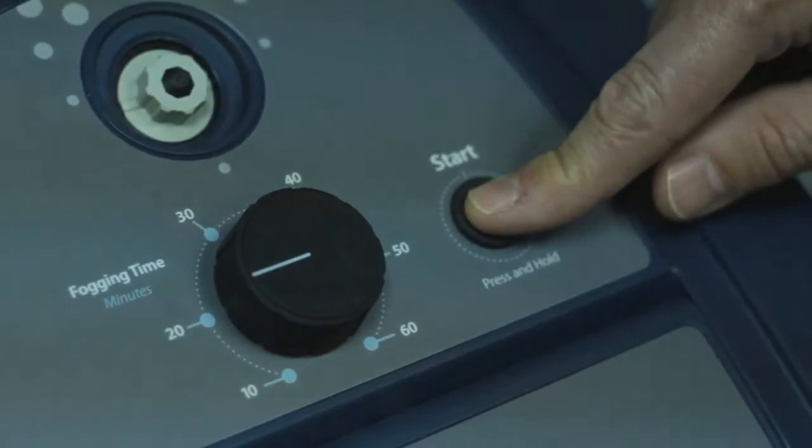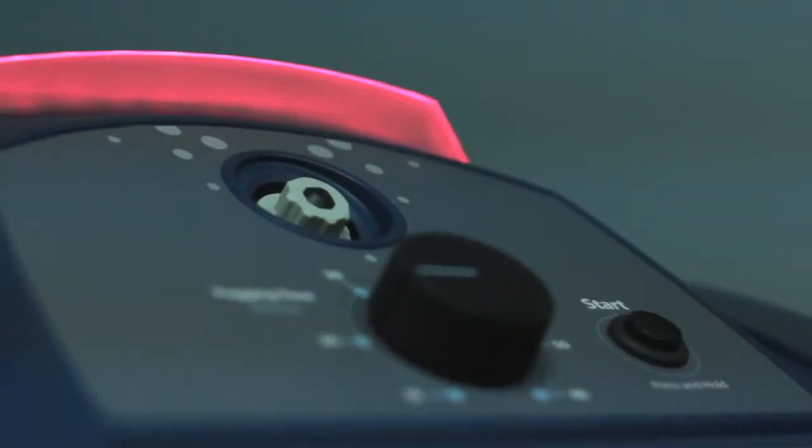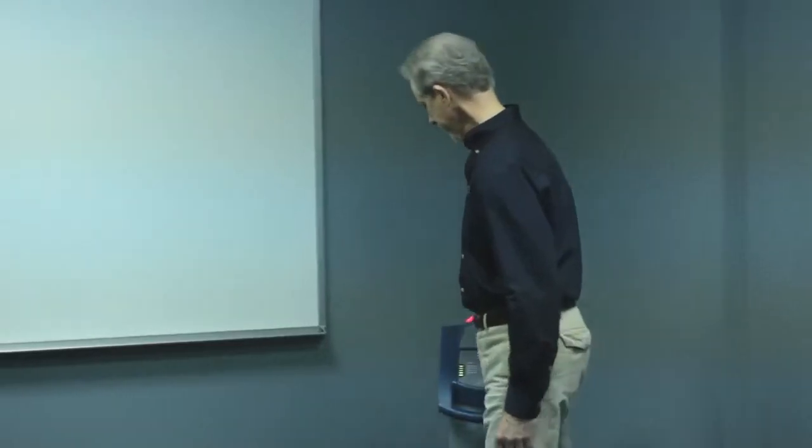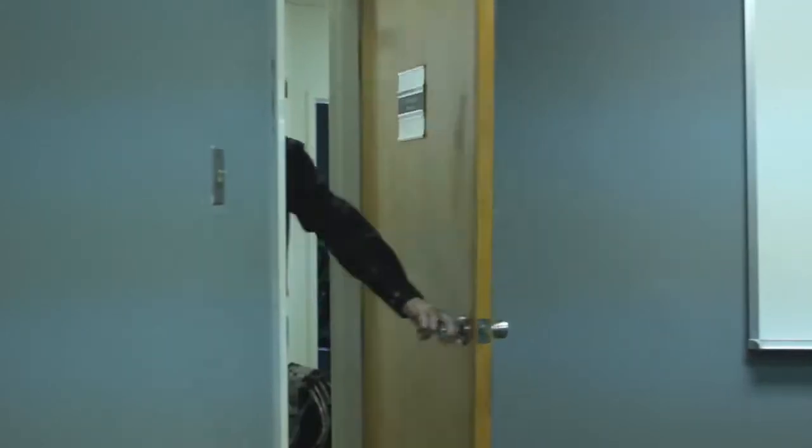To begin the treatment process, press and hold the start button for approximately two seconds. The green status indicator light will begin to flash red, indicating you have 30 seconds to leave the room before the Halo begins dispensing its disinfecting mist.